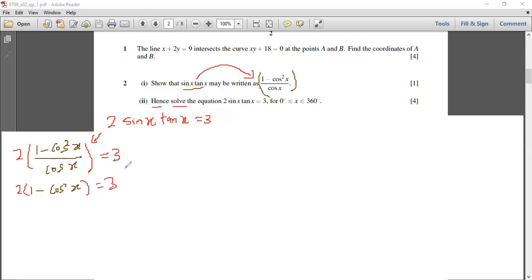And then you move the cos x becomes a numerator on the other side, cross multiply. And then you can easily see that it's turning into something else, which is a quadratic equation. So this and this times as you multiply, this becomes two times one, two cos square x equals to three cos x.